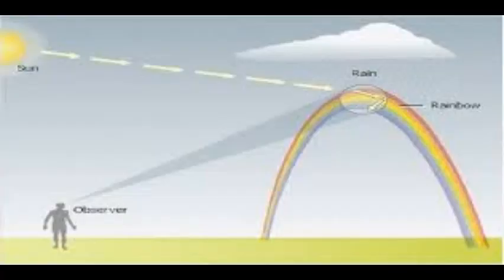Thus, the rainbow is curved, not straight, due to the reflection of light from the spherical shape of the water droplets. Thank you.